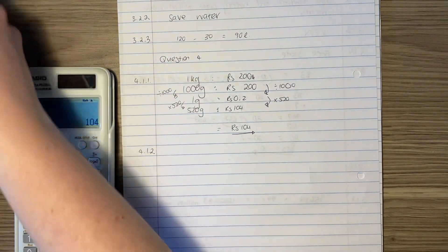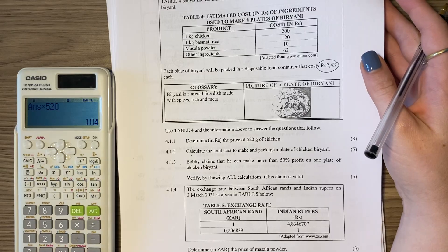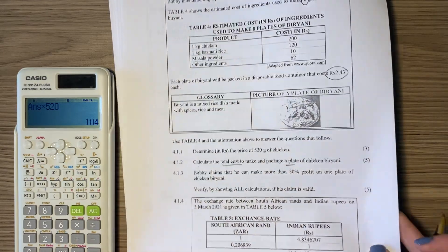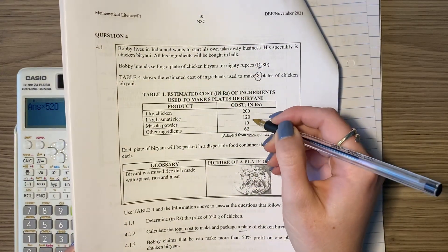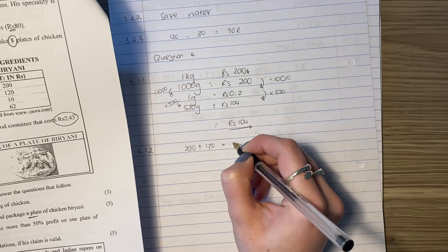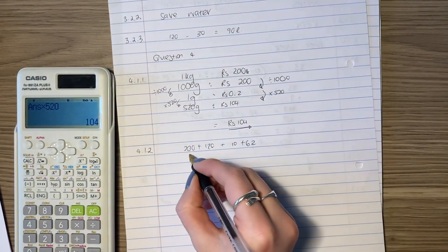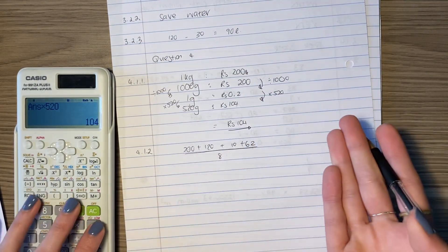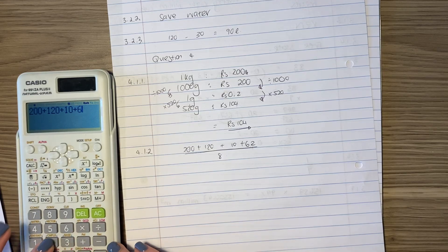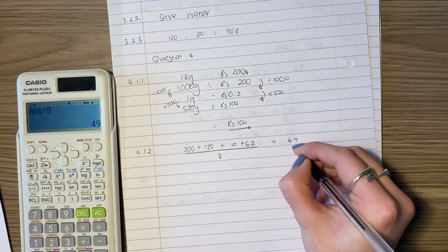Let's move on to the next question. It says, calculate the total cost to make and package a plate of chicken bryani. The total cost to make one plate, not eight plates, one plate. So let's add this all together and then divide it by eight because that will tell us how much one plate is. 200 plus 120 plus 10 plus 62. That's all the costs. And then we're going to divide it by eight. Why? Because it told us that all those costs go towards making eight chicken bryani. So then you put that down. Get your answer. Divided by eight. My answer is 49 rupees.